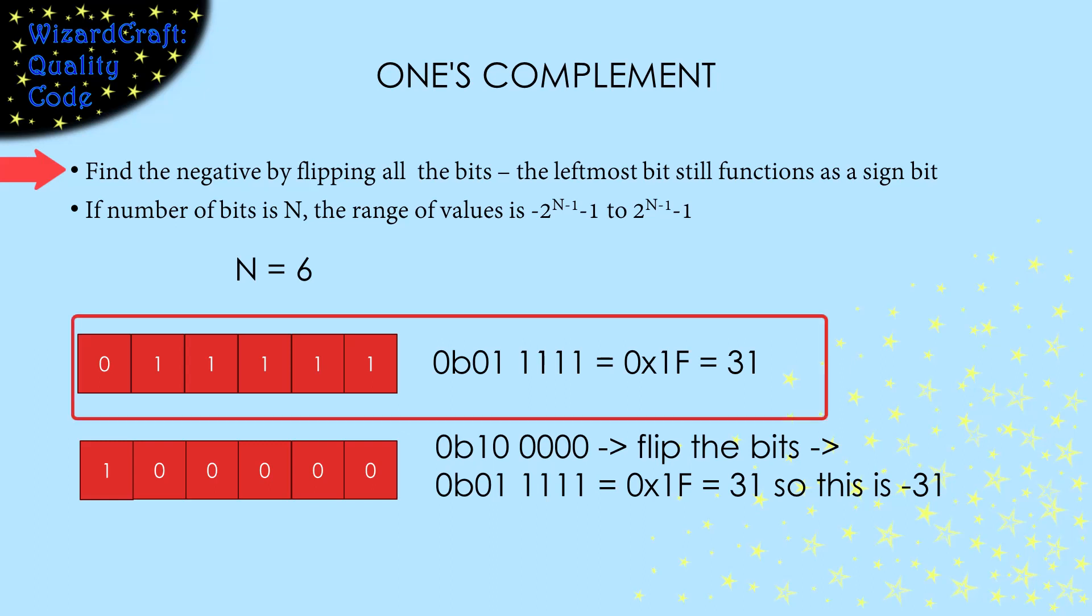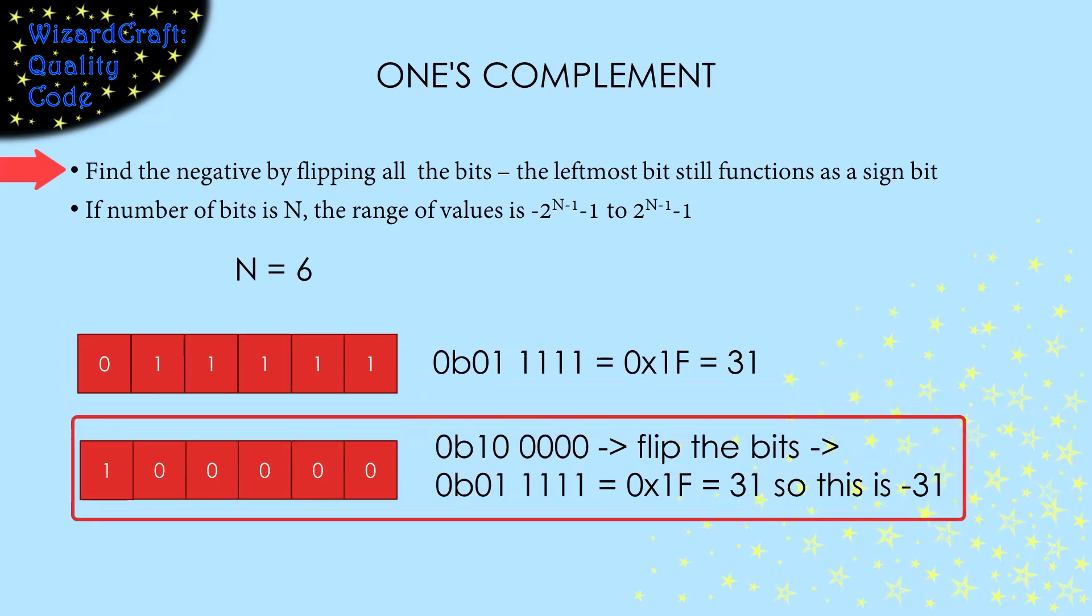This is the largest positive number that we can represent, 31. This is the most negative number we can represent. To figure out its value, flip all the bits, and we get 31. So this is storing negative 31. So the range of values we can represent again is 2 to the n minus 1 minus 1 through 2 to the n minus 1 minus 1.